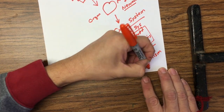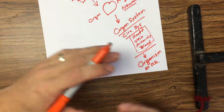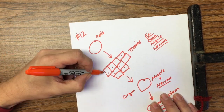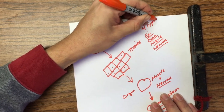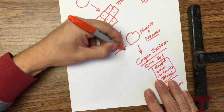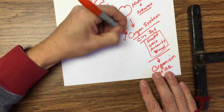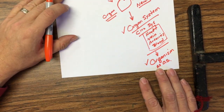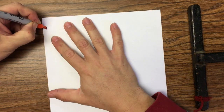When you put all the organ systems together, you get an organism. So: cells make up tissues — those are the four types of tissues — tissues come together to make an organ, organs come together to make an organ system, and organ systems come together to make an organism.